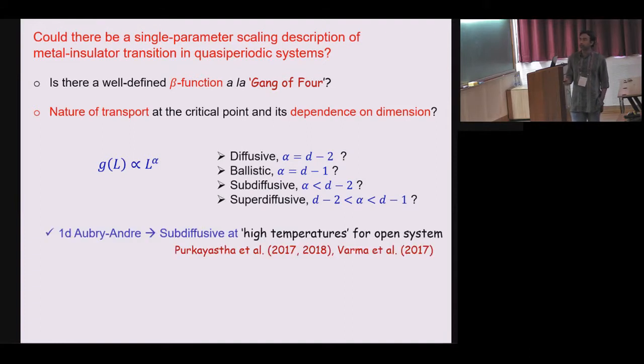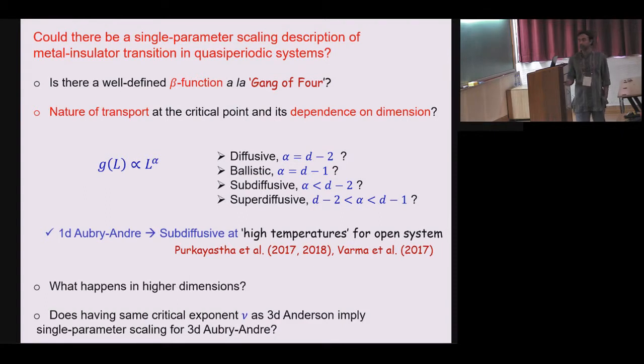This question has been answered by Abhishek and their work. When they looked into high temperature transport averaging over certain energy range they found that this critical point is sub diffusive. Now what we are asking is what happens in higher dimension and does having the same critical exponent as 3D Anderson imply that there is a single parameter scaling in 3D.